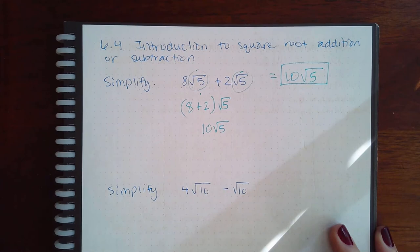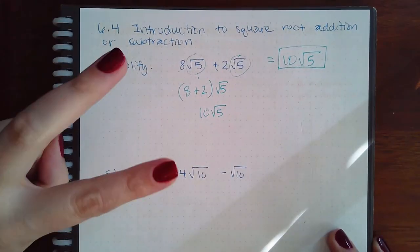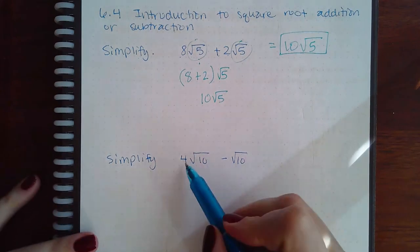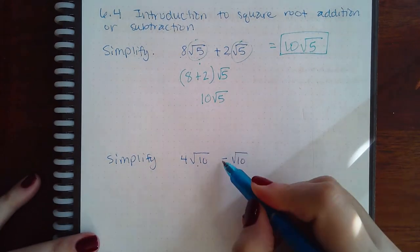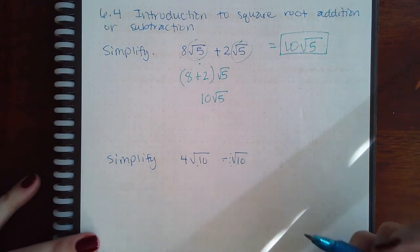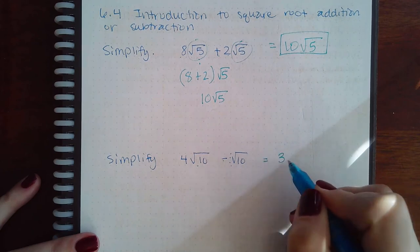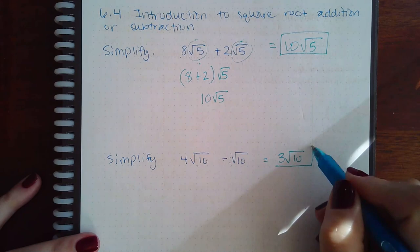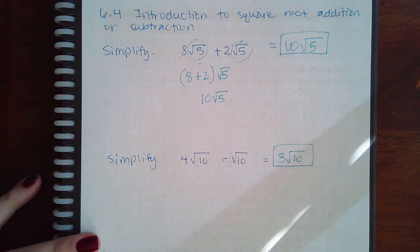So here I have four of these radicals minus one of the same kind of radicals, means I'm going to end up with three of those radicals. And that's it for this topic.